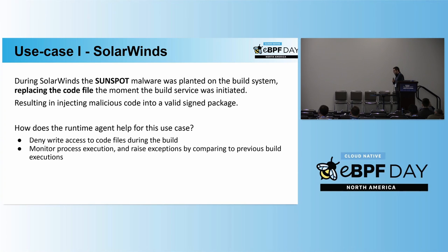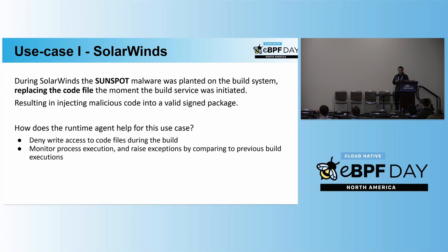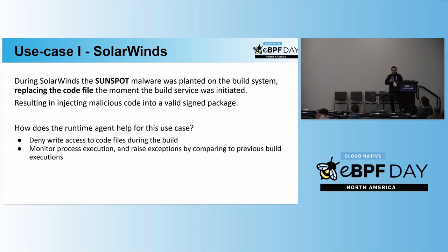How could this specific eBPF agent solve this issue? First, the most straightforward method will be to deny any write access to the source code file during the CI build — it's plain simple but can be very effective. Another possible solution would be to monitor process execution and file system access, and maybe compare it with the previous execution of the same build, since workflows are usually quite repetitive in their tasks.